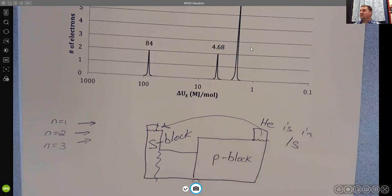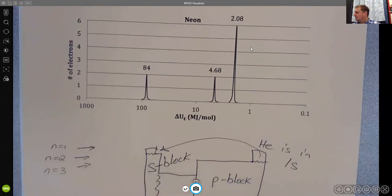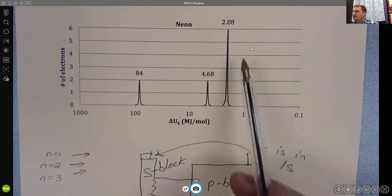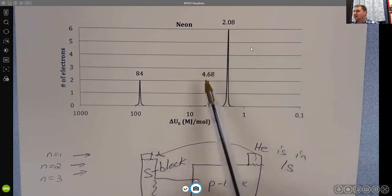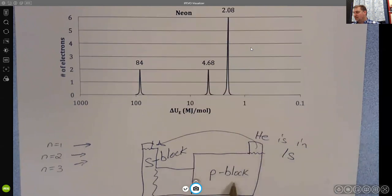And that helium, we would say helium has electrons in the 1s, and something like neon here, these six electrons here, we would say those are in the 2p, which is where neon happens to be.